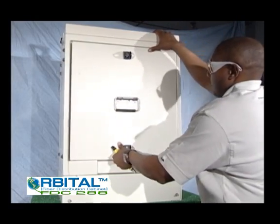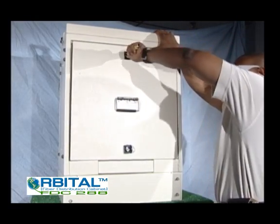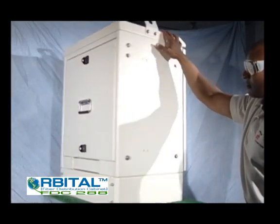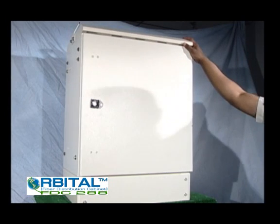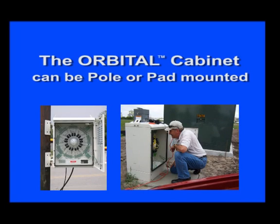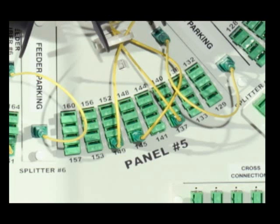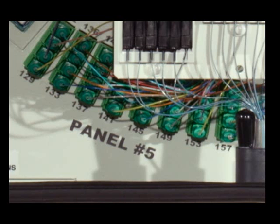The orbital cabinet has both front and rear access doors and can either be pole mounted or pad mounted, offering maximum flexibility in various deployment environments. Convenient record keeping for management and reference is easily accessed inside the front door. The fiber ports are labeled in both the front and the rear for clear identification and troubleshooting of fiber circuits.